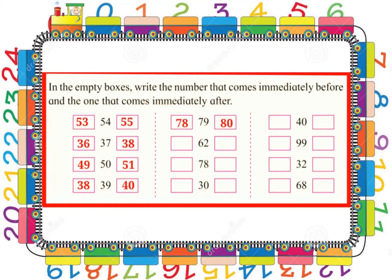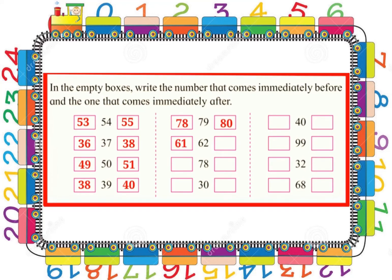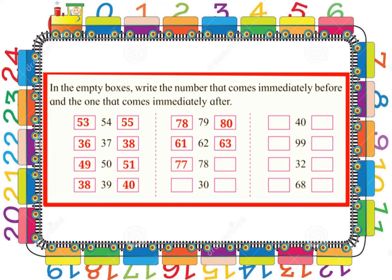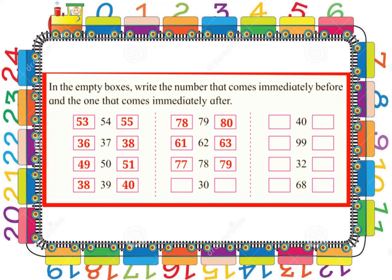Now can you all tell me which are the neighbouring numbers before and after number 62? Yes children, you all are right — the neighbouring number before 62 is 61 and the neighbouring number after 62 is 63. Now can you all tell me which are the neighbouring numbers before and after number 78? The neighbouring number before 78 is 77 and the neighbouring number after 78 is 79.